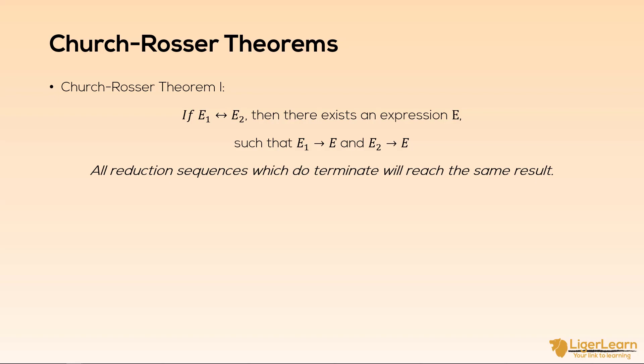Don't worry if you don't understand this. Like I said, it's more important to understand the corollaries. And so a corollary of this theorem is that we can say that there will only ever exist a single normal form for an expression. So of all reduction sequences, those which do terminate will reach the same result. That's definitely a good thing to know.